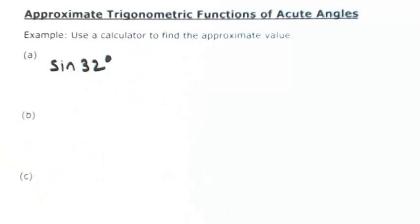We know the sine of 30 degrees, which is one-half, but we don't really know the sine of 32 degrees. So to find an approximate value, we're going to use our calculator.